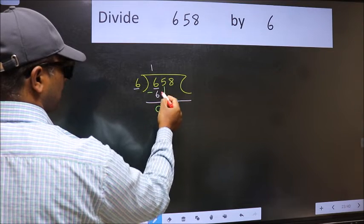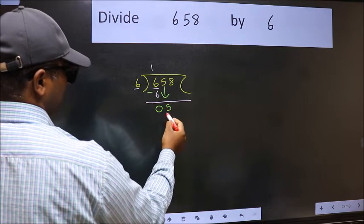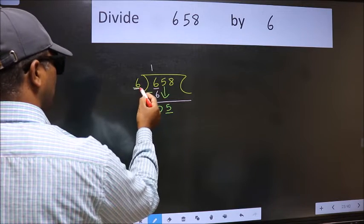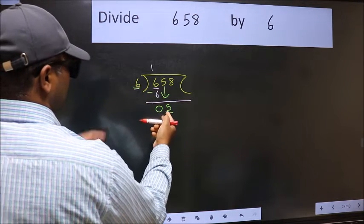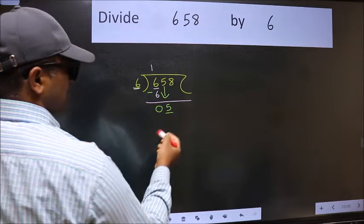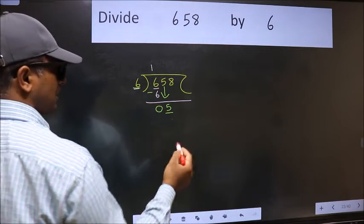After this, bring down the beside number. So 5 down. Now here we have 5 and here 6. 5 is smaller than 6, so we should bring down the second number.